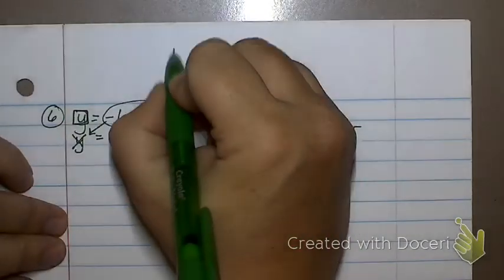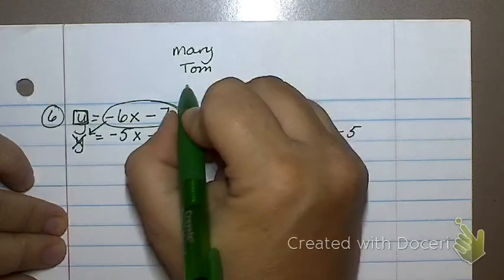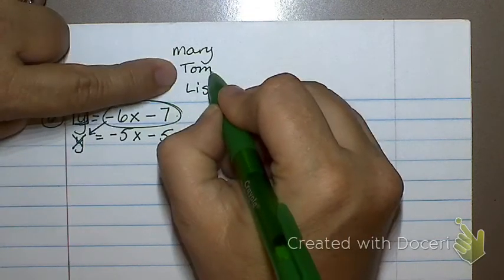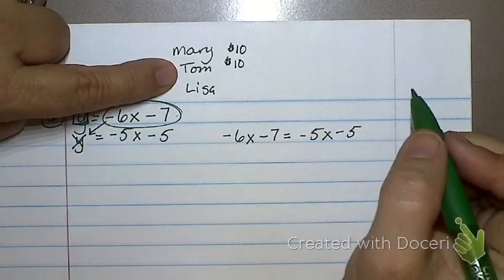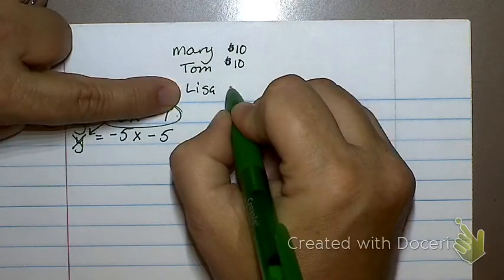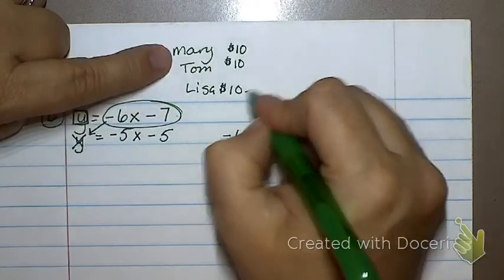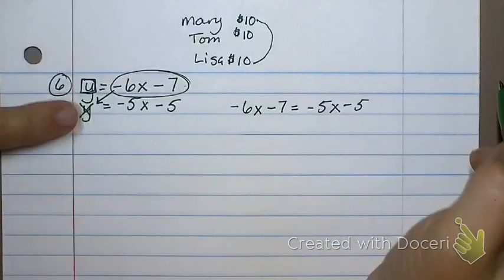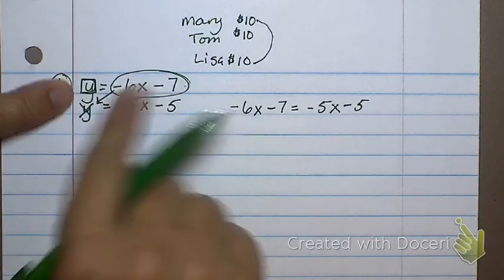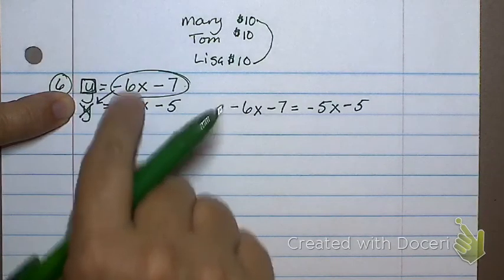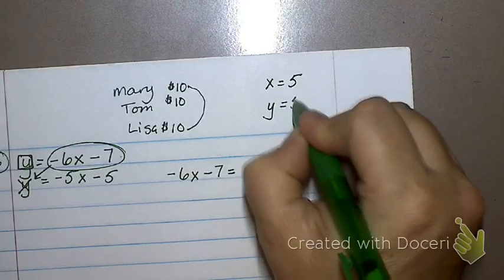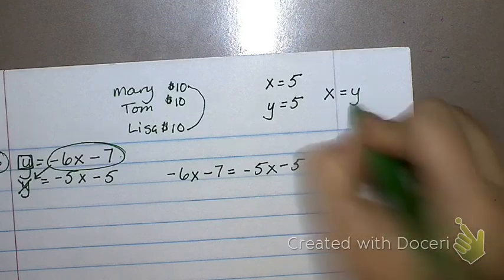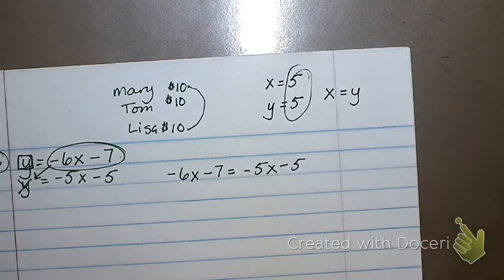So if you have three people, let's say we have Mary, Tom, and Lisa. If Mary has the same amount of money as Tom, let's say she has $10 and Tom has $10. Mary has the same amount of money as Tom. Let's say Tom has the same amount of money as Lisa. Can we then conclude that Lisa has the same amount as Mary? That's what's going on here. If y is equal to this, and y is equal to that, then those two things have to be equal. If x equals 5 and y equals 5, can't I conclude that x is equal to y? Because they're both equal to the same thing. That's what we're doing here, which is why we can set those two things equal.